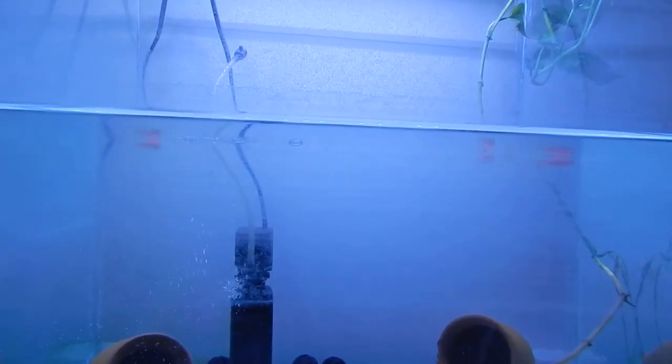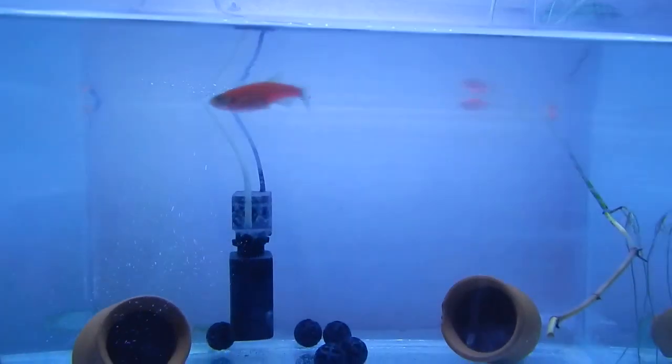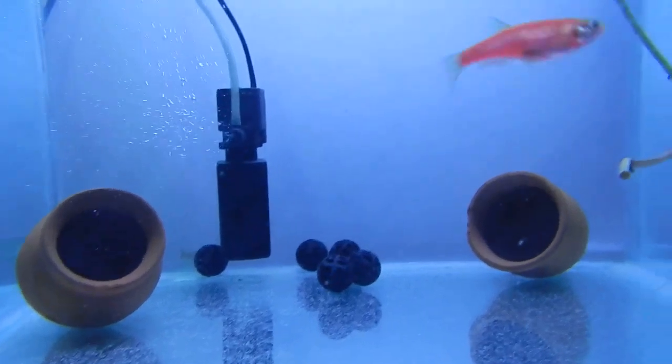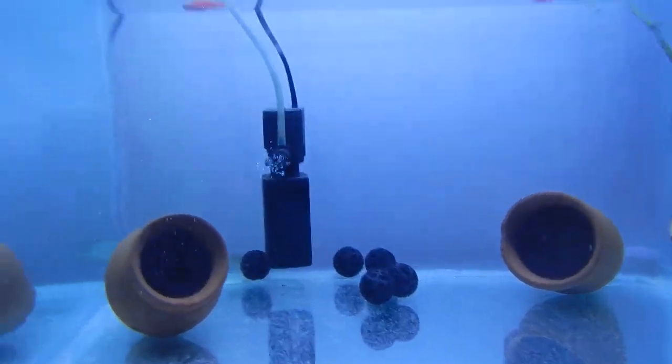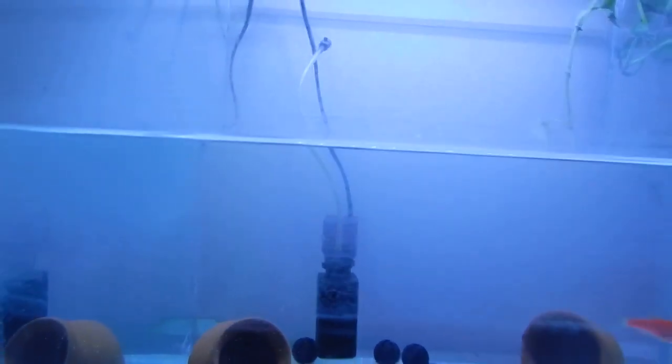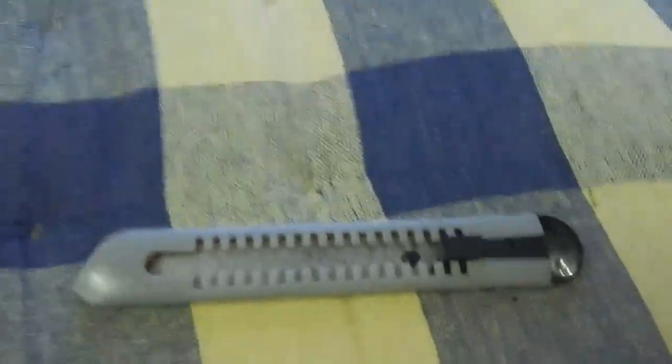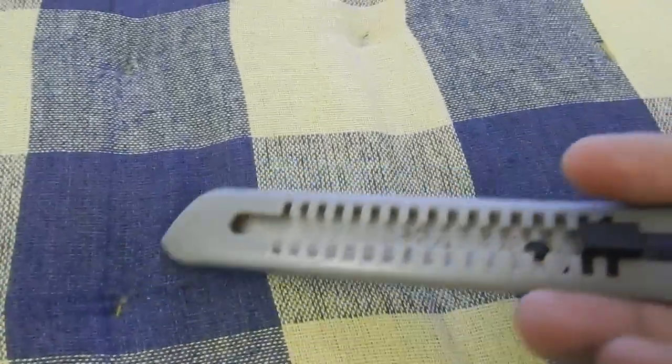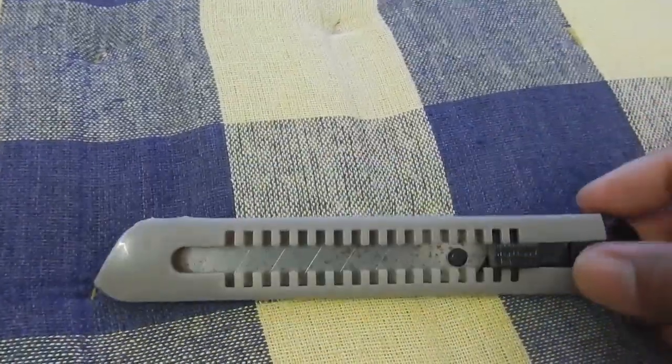As you can see the fish is also looking very blurry, but as I go below you can see the fish looks crystal clear. The only option I have is to use a blade because I don't want to use chemicals and currently I don't have an RO system in my house.